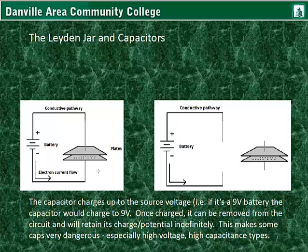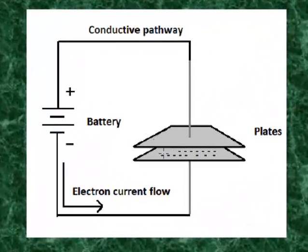The capacitor basically consists of two plates very, very close to one another. These two plates have leads protruding out from the device, which is normally in a particular type of case — aluminum or some other type of coating. The capacitor works by utilizing the force of attraction between the negative terminal and the positive terminal of the battery.